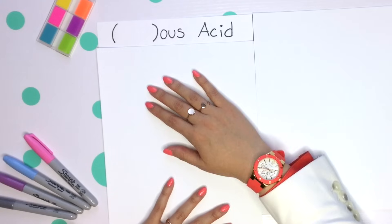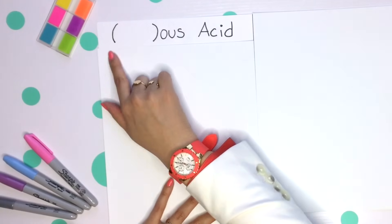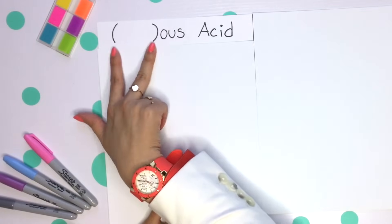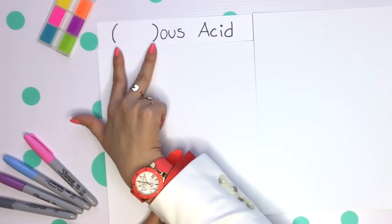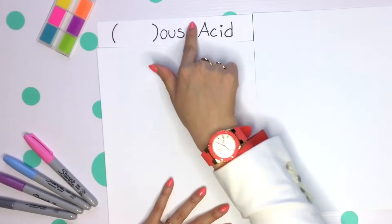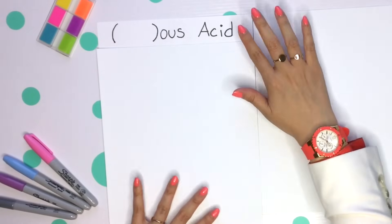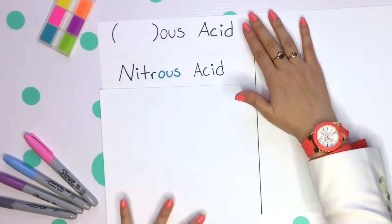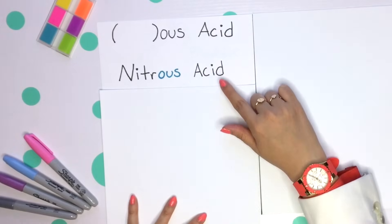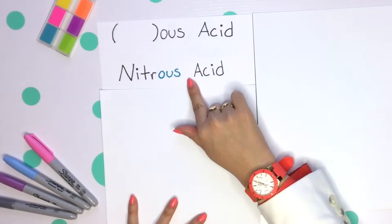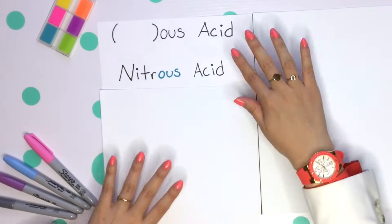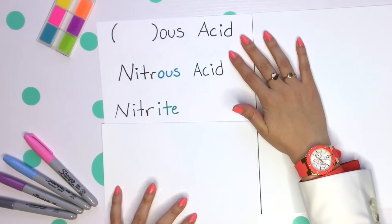The second type of acid does contain oxygen, so our prefix is gone — there is no prefix for this second type of acid. Your setup, which has no prefix, goes right into the root name of your element. For example, if we were to have nitrous acid, that -us actually refers to -ite, and our polyatomic ions come back into play.